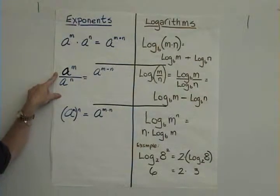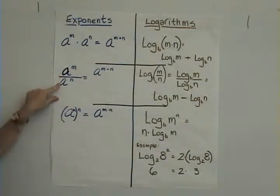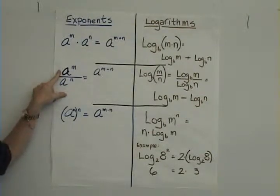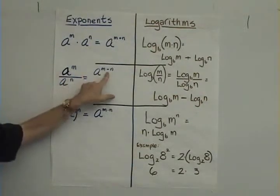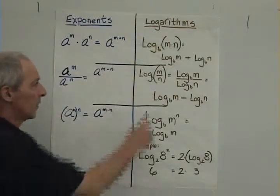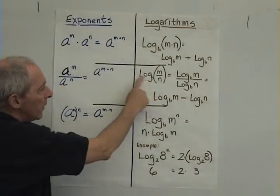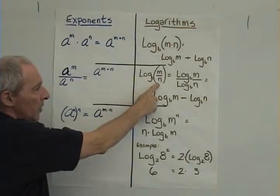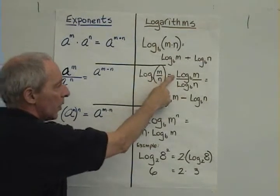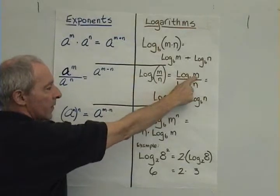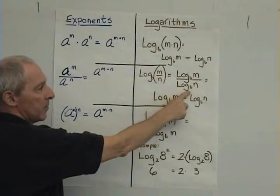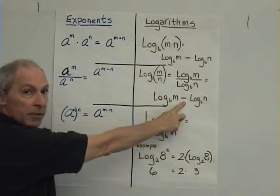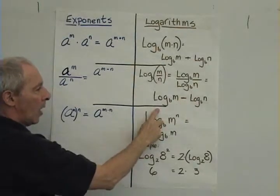Here, in the law of exponents, two numbers in the same base where there's division involved, we can simply subtract the exponents. Similarly, in logs, if we have a log with a specific base and we have two numbers that are being divided, it works out to be the log base b of m over the log base b of n, and we can simply subtract the two logs.